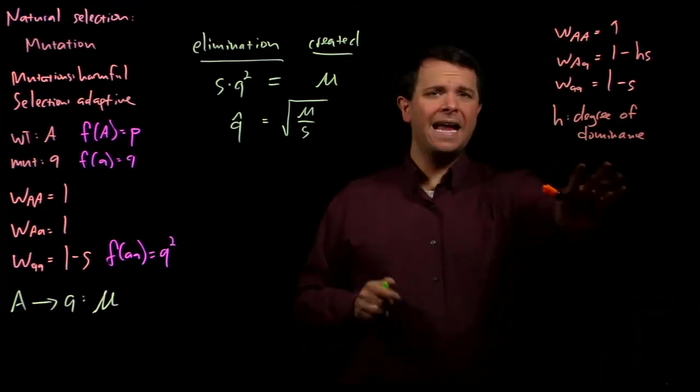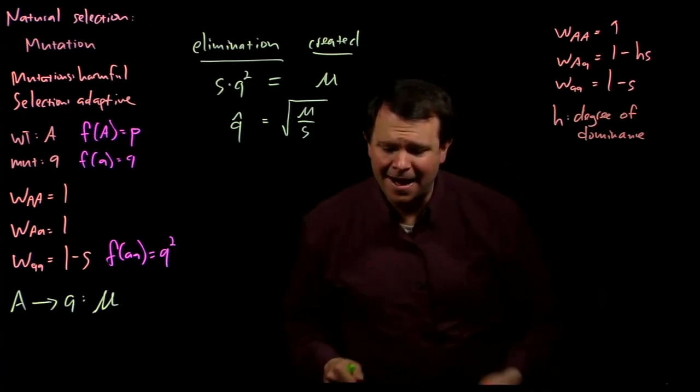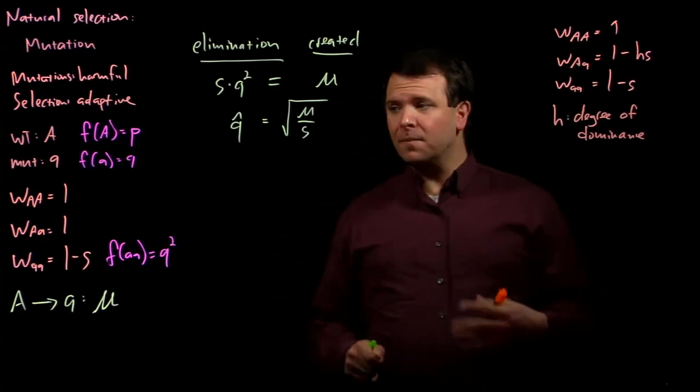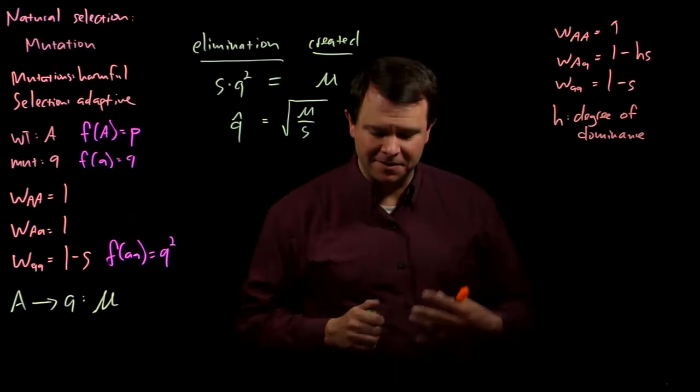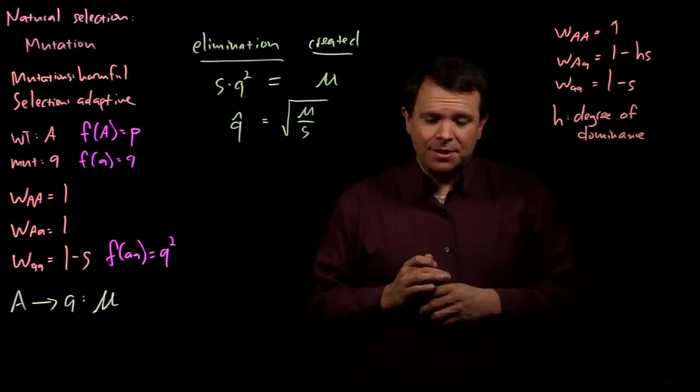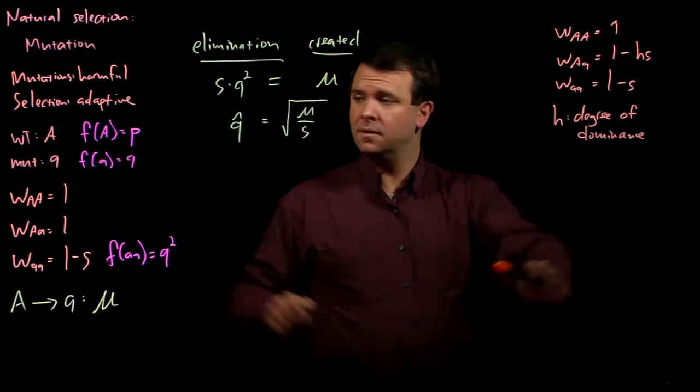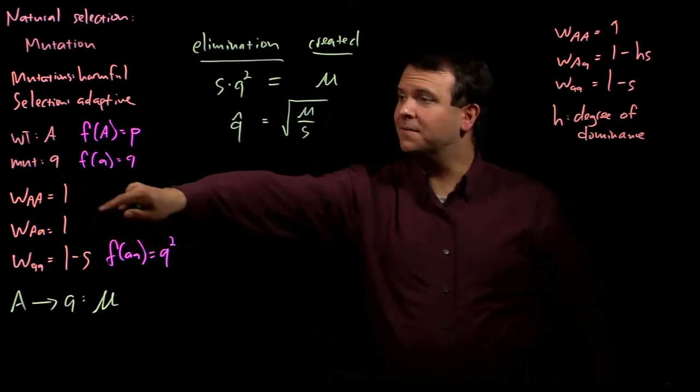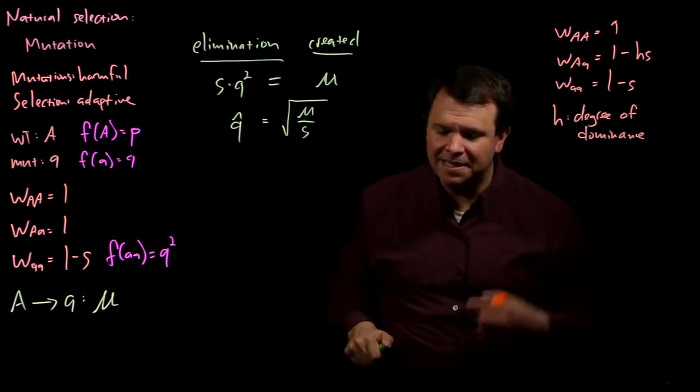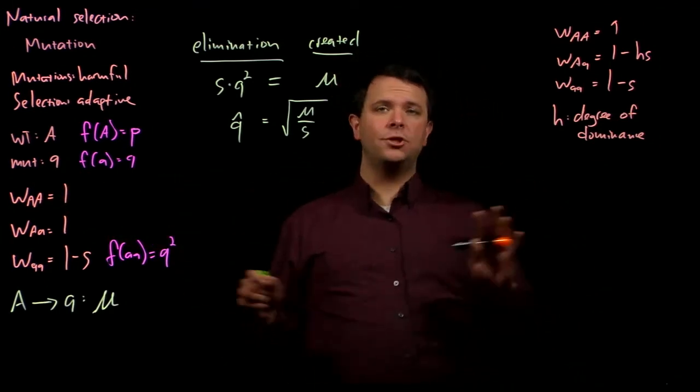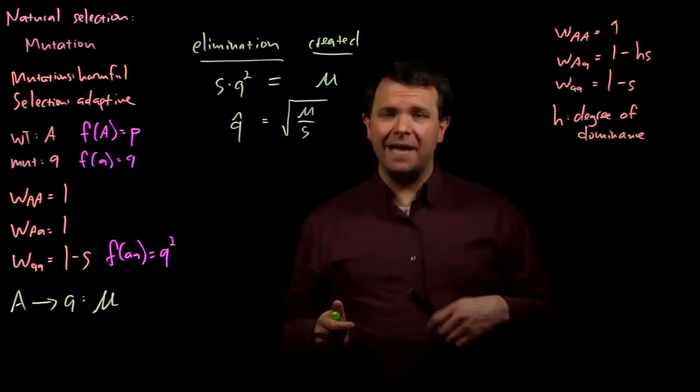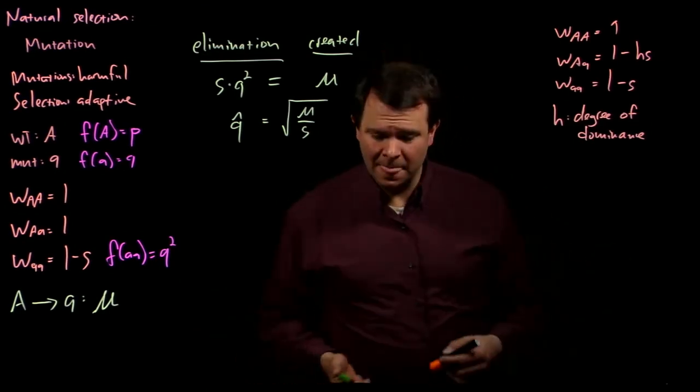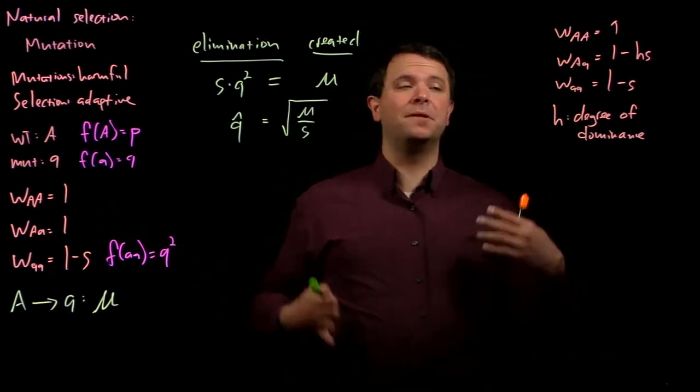We call H the degree of dominance. H is a measure of how dominant this harmful mutated allele is. If H is 0, the mutation is completely recessive—it doesn't show up at all in the heterozygote. But if H is 1, then that harmful allele is completely dominant.